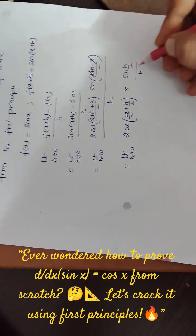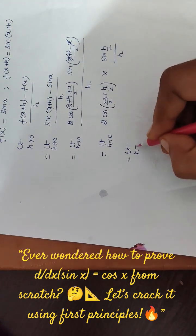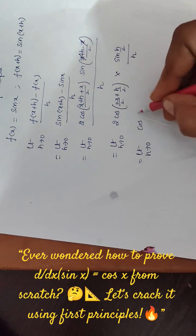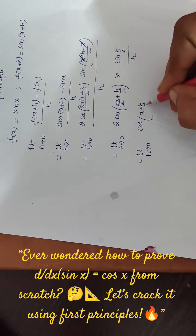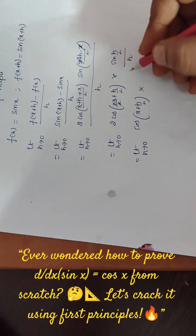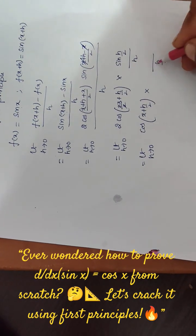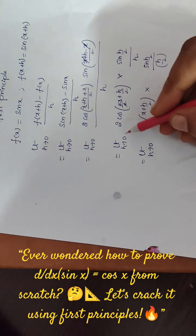Now here, limit h tends to 0, cos of 2 to cancel, and here x plus h by 2, into these two I am writing here h by 2, and here sin h by 2.